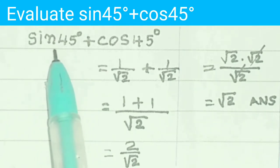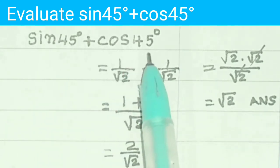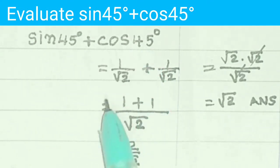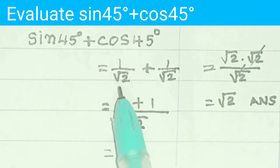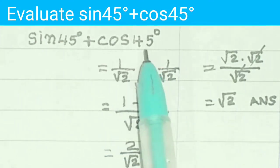Evaluate sin 45 degrees plus cos 45 degrees. sin 45 degrees is 1 by root 2, cos 45 degrees is 1 by root 2.